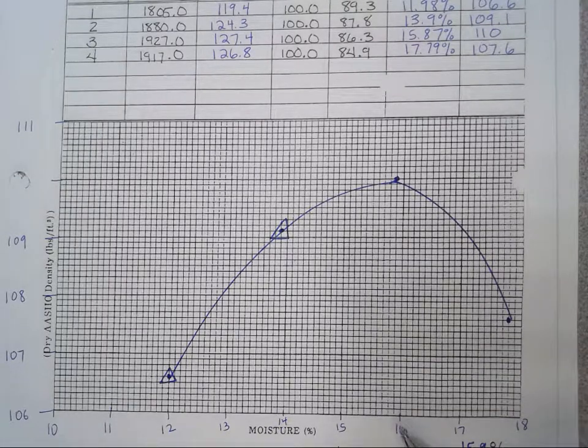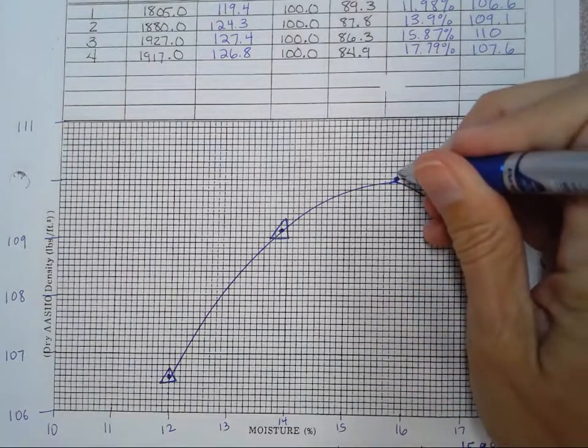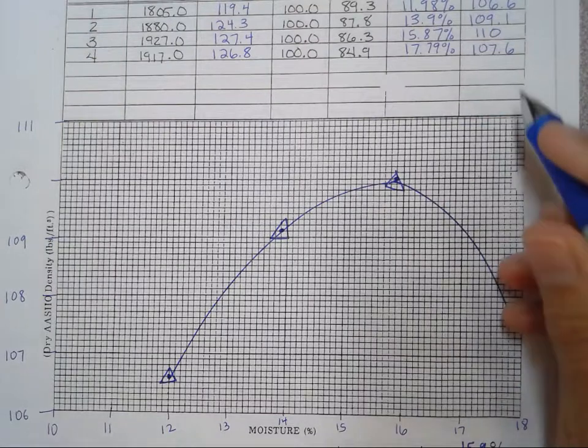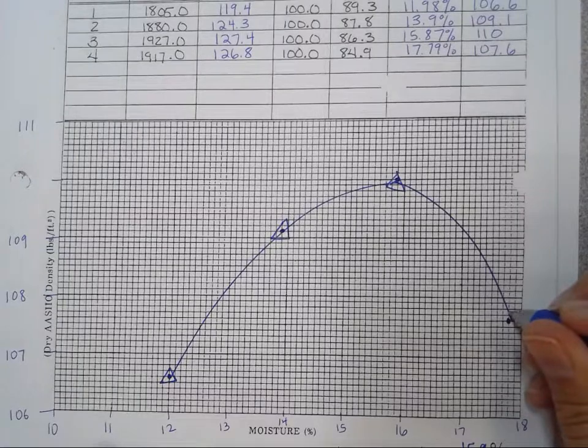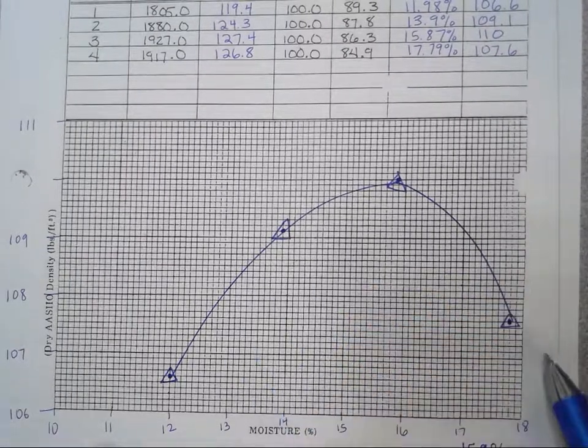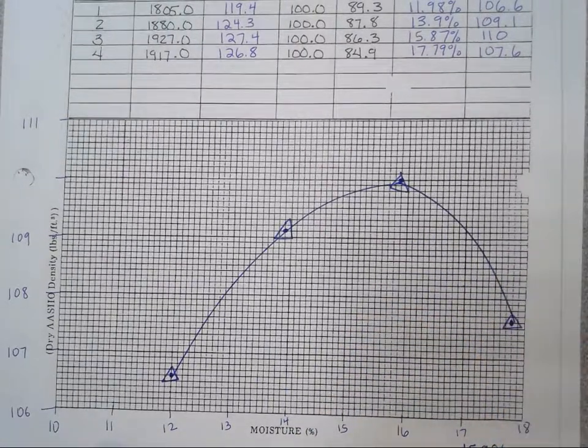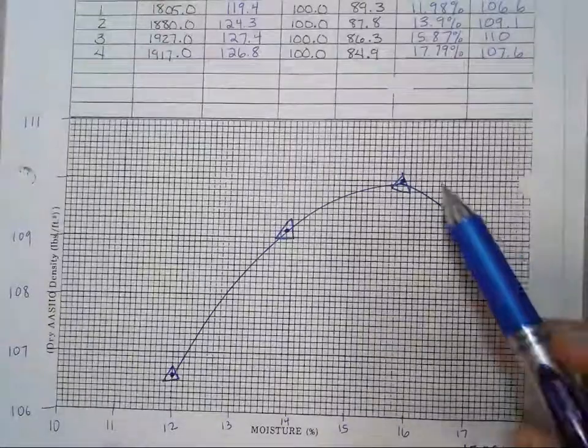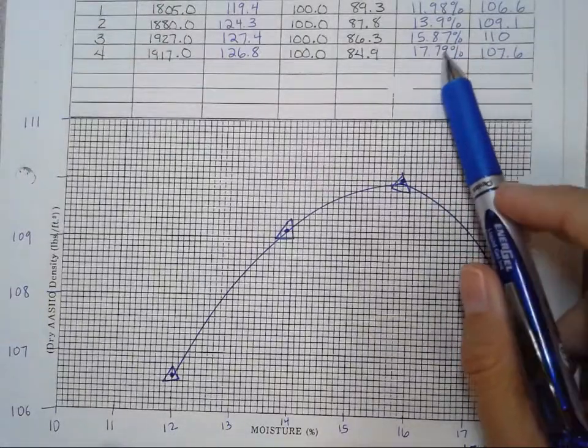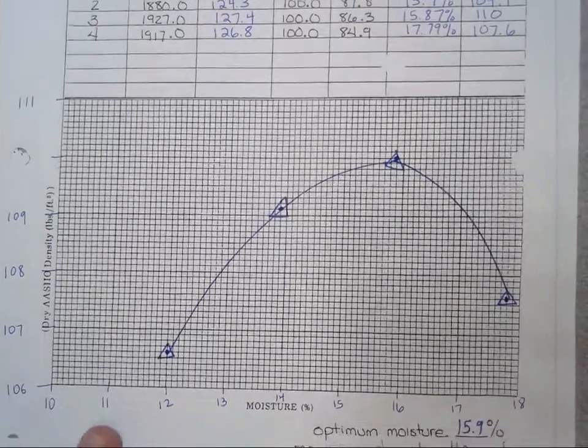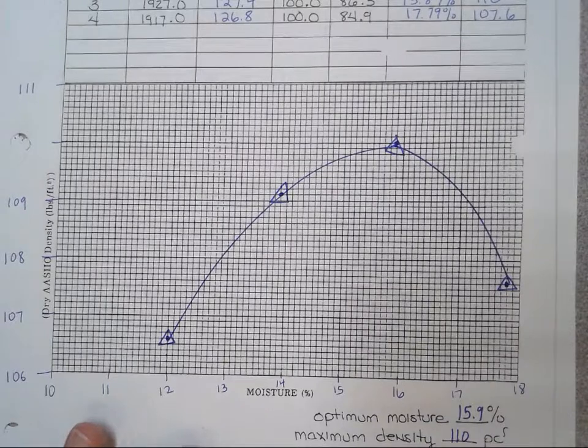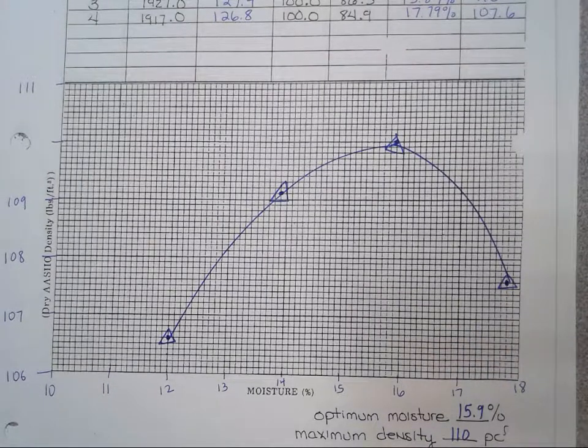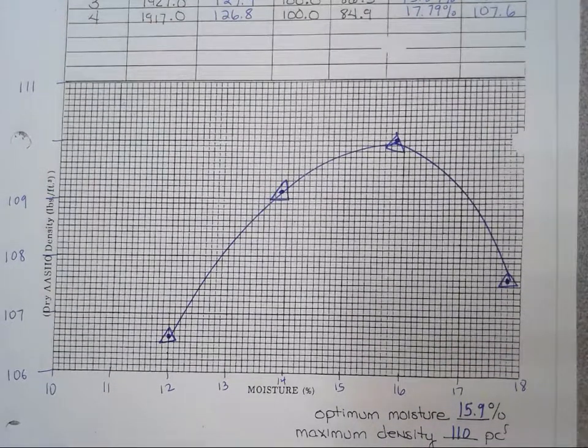And then 15.87 and 110. And then 17.79 and 107.6. So when I connect those lines, I pretty much have a high point there existing on my graph, with that 15, could say 15.87. I took that up to 15.9 and 110. That high point is just part of my graph. And so that is going to be my high point with my optimum moisture and my maximum density for BS4.